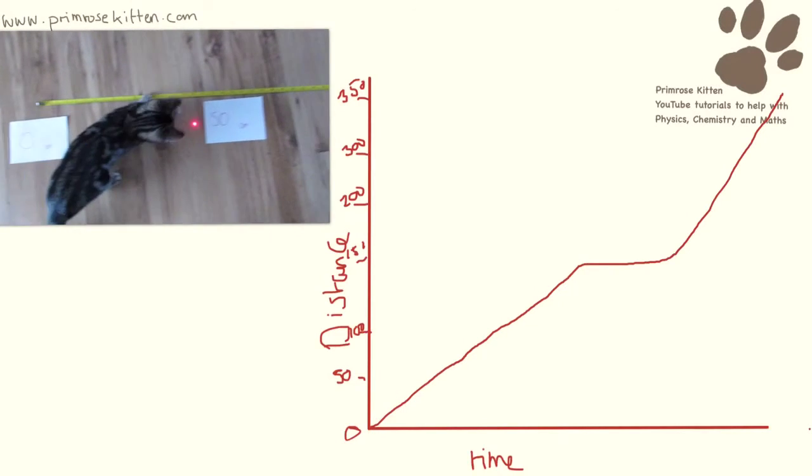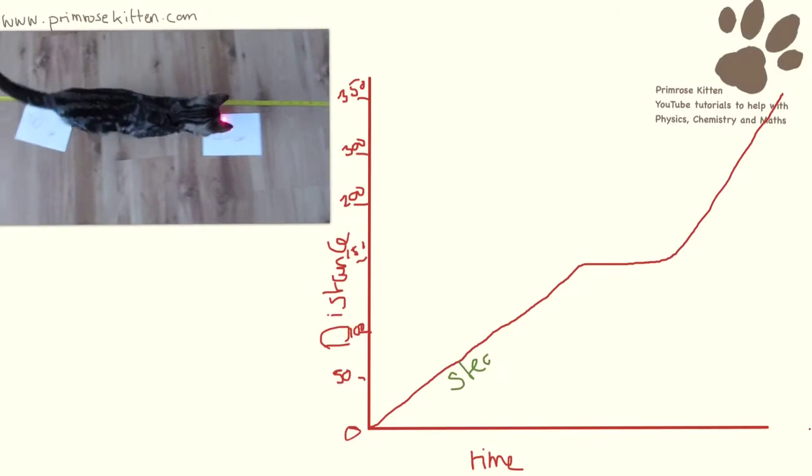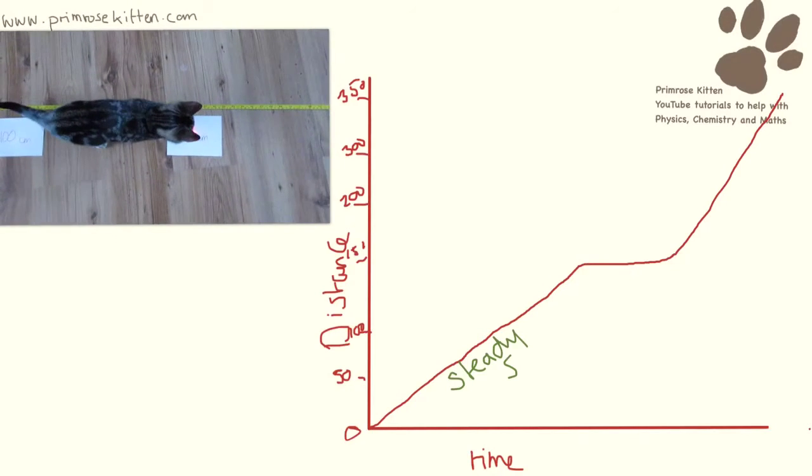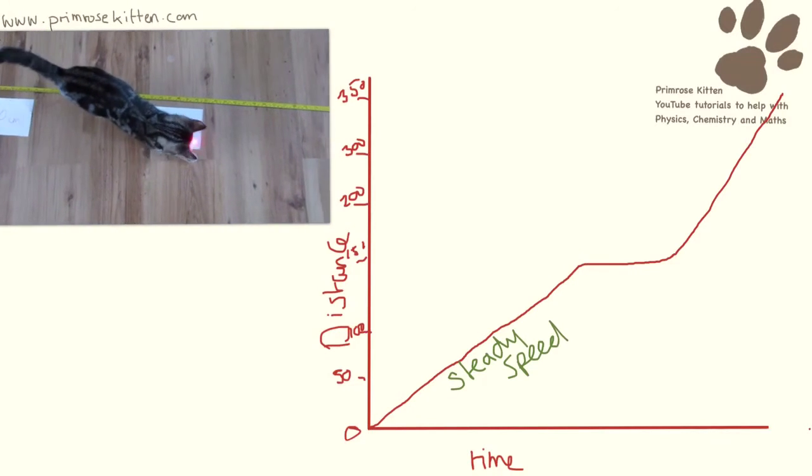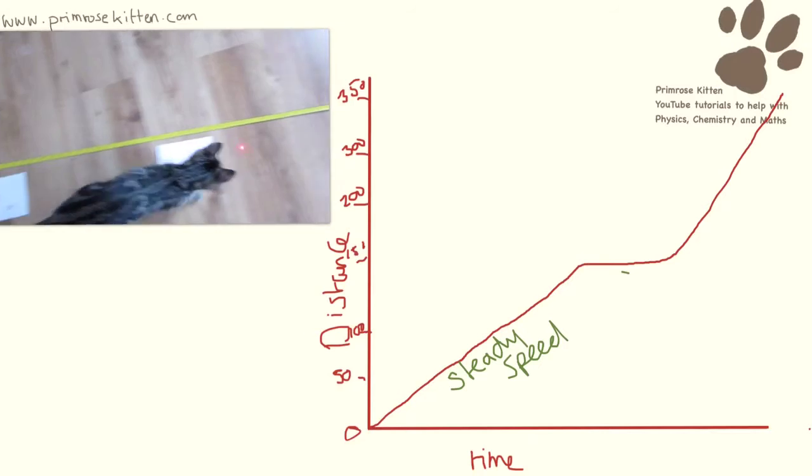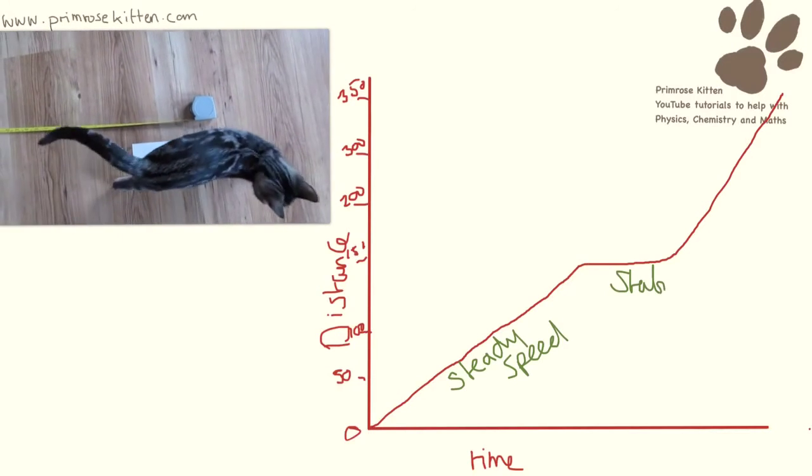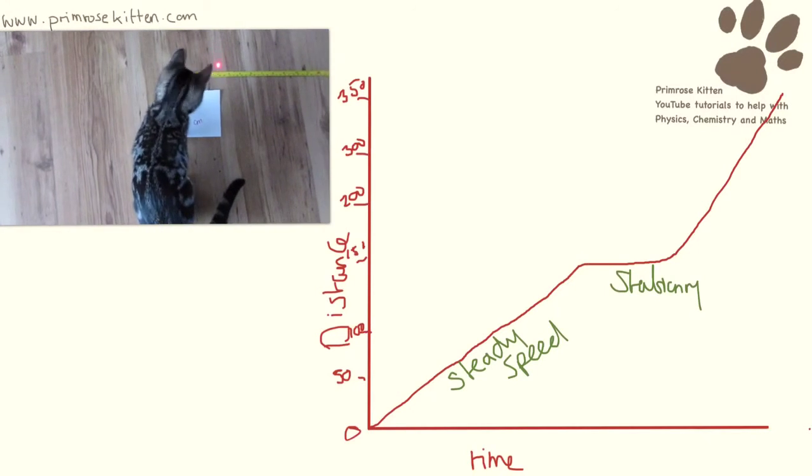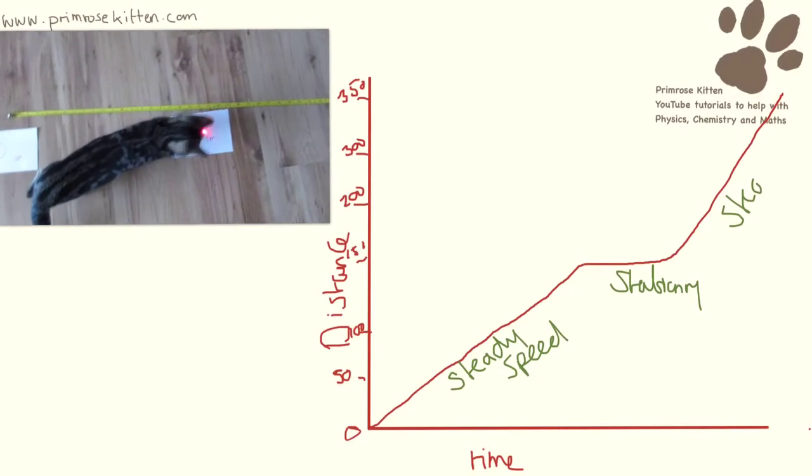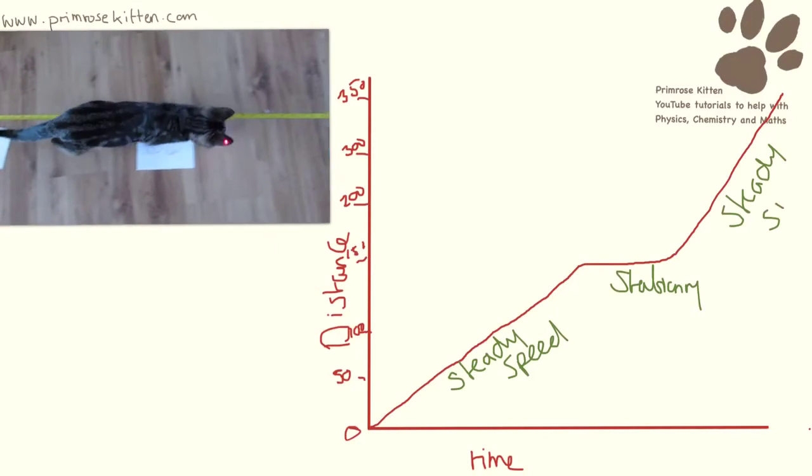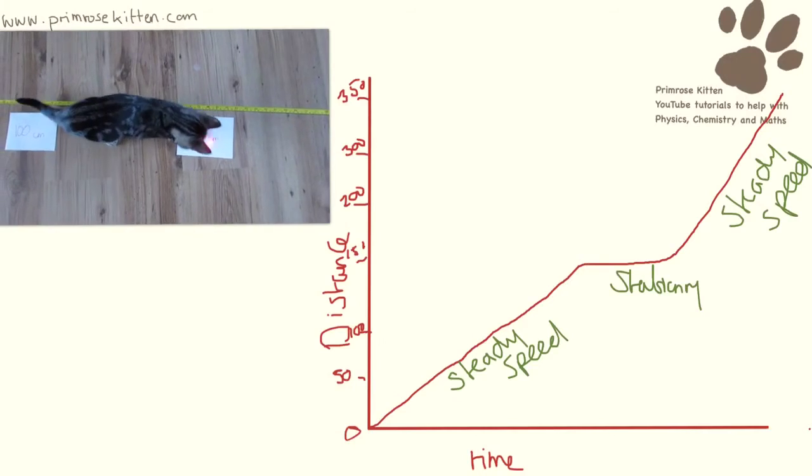So when we are going up like this we are going at a steady speed. When we are flatline we are stationary. And then this line up here is also at a steady speed.